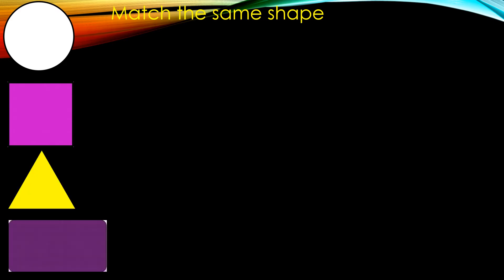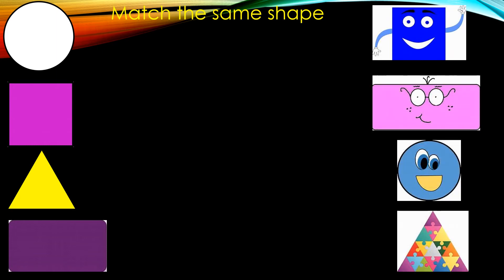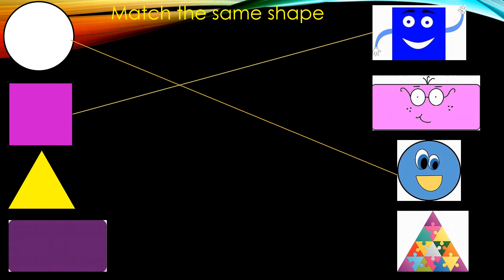Okay, match the same shape. I will see the same shape to the 2D shapes and I will match them together. We have circle, square, triangle, and rectangle. Let's see the shapes. Circle — do I have any shape that looks like a circle? Yes, super! The square — do I have any shape that looks like a square? Yes! The triangle — do you have any shape that looks like a triangle? Yes, supers! And the last one is rectangle.